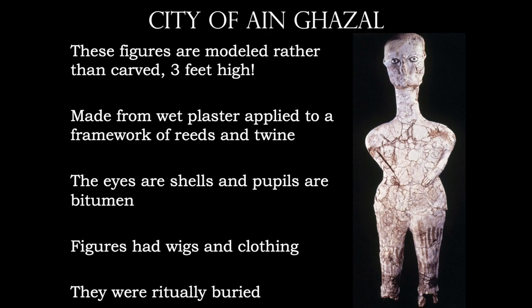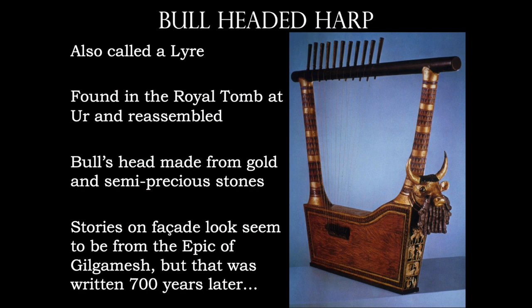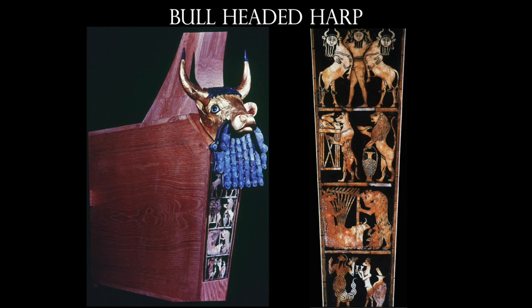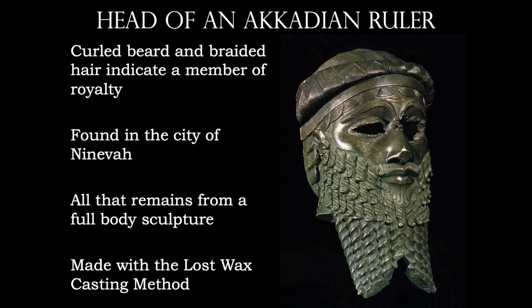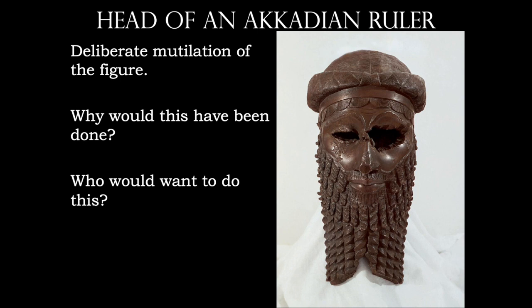We have cylinder seals and the bull-headed harp, once again telling us a narrative. In the Akkadian Empire, we have the head of the Akkadian ruler — one of the few bronze pieces to survive since antiquity, as most bronze sculptures were melted down and repurposed. The figure's eyes and ears were gouged out, perhaps ceremoniously, to kill any power the sculpture had. This is made with the lost wax casting method, which allows us to create hollow sculpture. Developed during the Bronze Age around 2500 BC, it creates lighter weight sculptures using less rare material and is therefore less expensive.